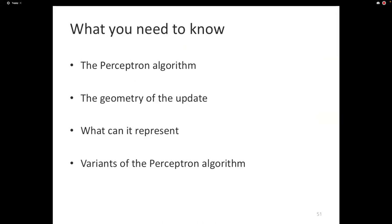That's the end for now. What you need to know: the algorithms, the geometry of the update, what it can represent, and the various variants. At this point, you have everything you need for your homework. Regarding the average perceptron — you don't divide by the number of examples for averaging, because we only care about the sign of the dot product, and dividing by the number of examples doesn't change the sign.